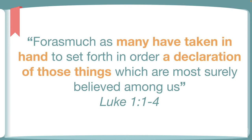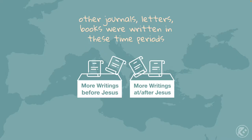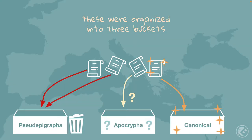Many have taken in hand and written a declaration of those things. So there were a lot of additional writings that the apostles maybe even quoted or held in high regard that were not part of the Hebrew Tanakh, and were not part of the manuscripts that ultimately made it into the Bible. We had journals, letters, and books written before and during the time of Jesus. These are divided into three buckets: the pseudepigrapha, the apocrypha, and the canonical.